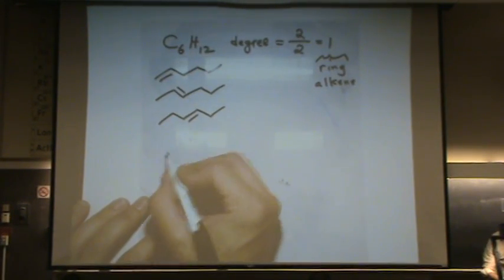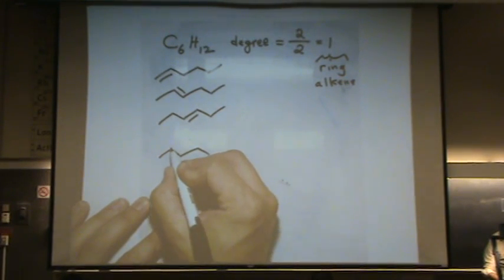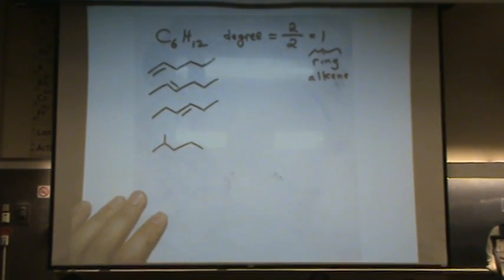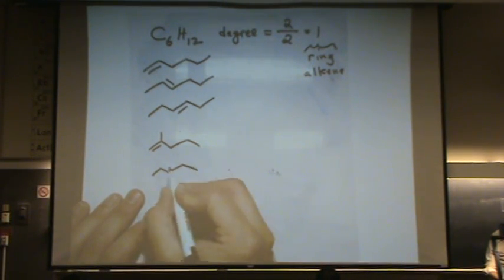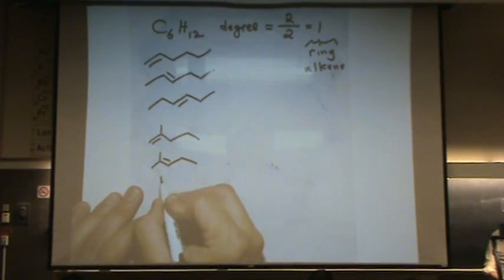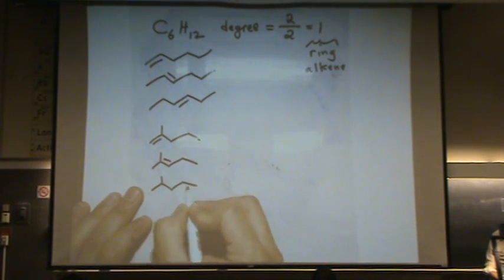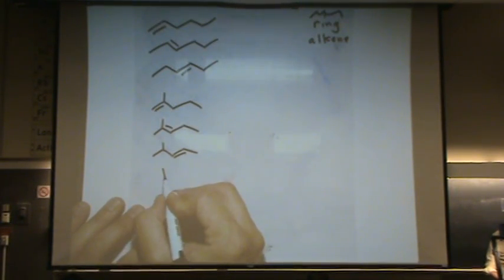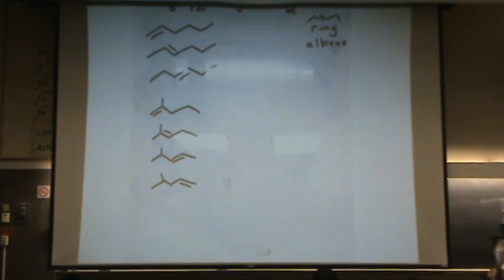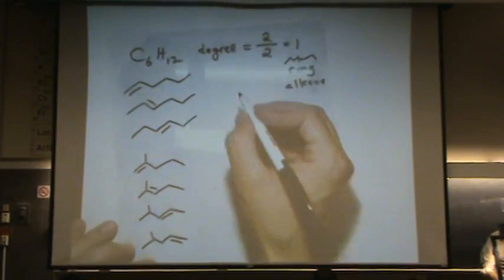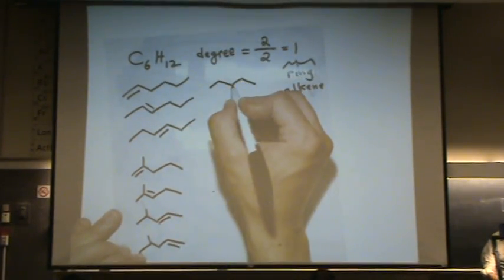I could go down to five and put one methyl group on here. So I can do that one. I can do this one. So it's kind of like a little puzzle. You just got to figure out all the different possibilities that you can have. I could also have that methyl group four or five right in the middle.